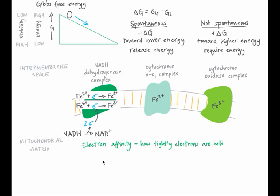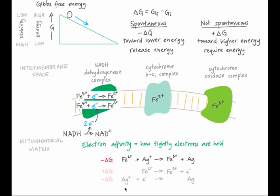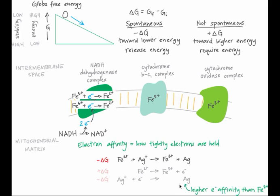Why do electrons move from NADH to NADH dehydrogenase complex and not the reverse? It's all about electron affinity and thermodynamics. When electrons are more tightly held, they're more stable. For example, in the redox tutorial, we saw that iron 2+ will give up an electron to silver+ because the overall delta G of the reaction is negative. In other words, neutral silver and iron 3+ have lower energy than do iron 2+ and silver+. This is because silver has a higher electron affinity than does iron 2+.